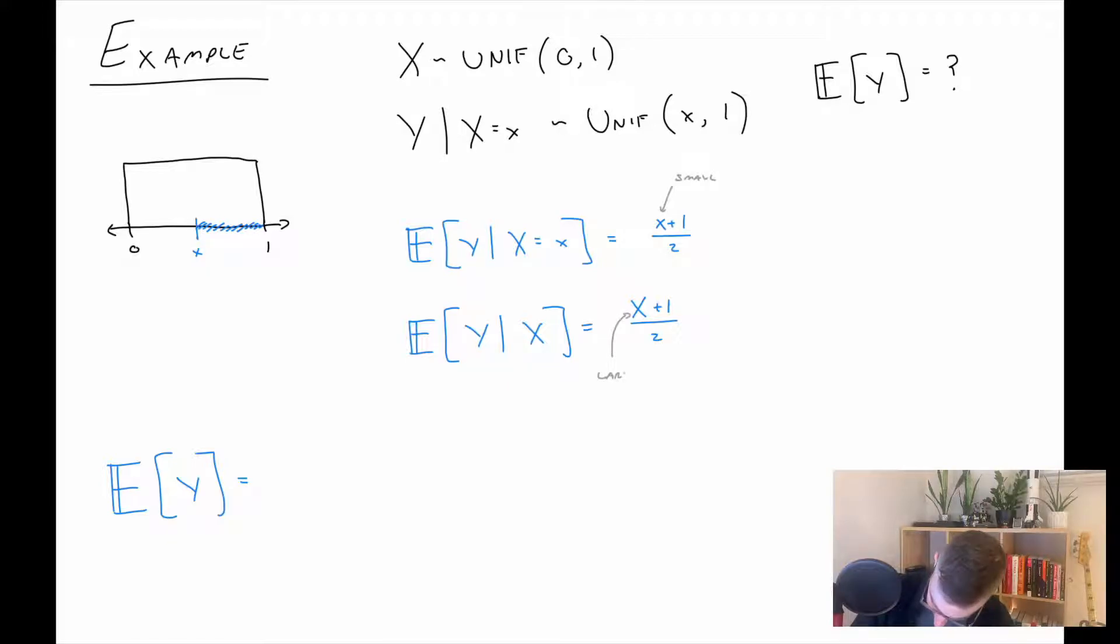These are two very similar looking things but they mean different things. So this is a function of X and it will output a number. So this would be like, we observe X and it's—I was about to say it's three but it can't be three—we observe X and it's 0.2. So in that case we can plug in here and now we know the mean of Y when X is 0.2. But this is a random variable. Note that the only thing that's random here is X. That's interesting.